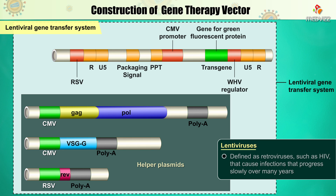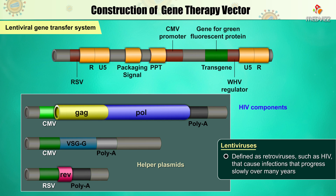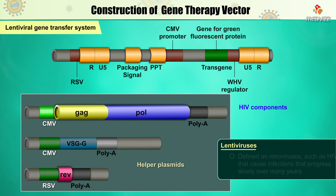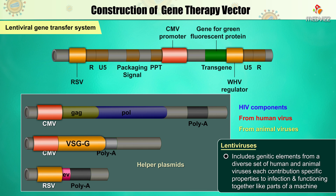Lentiviruses are defined as retroviruses, such as HIV, that cause infections that progress slowly over many years. Although it is named for a lentivirus, the system in fact includes genetic elements from a diverse set of human and animal viruses, each contributing specific properties to infection and functioning together like the parts of a machine.